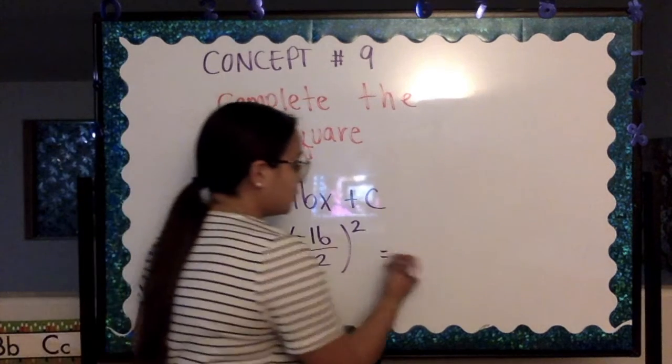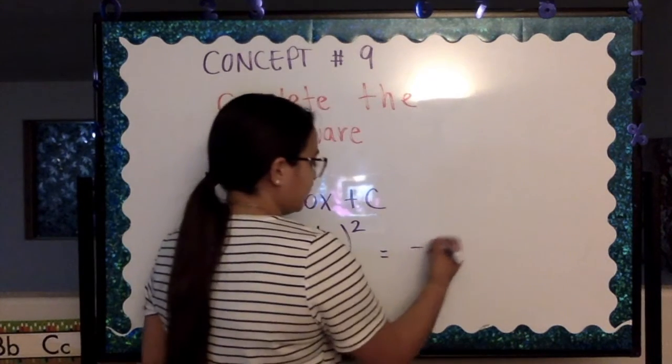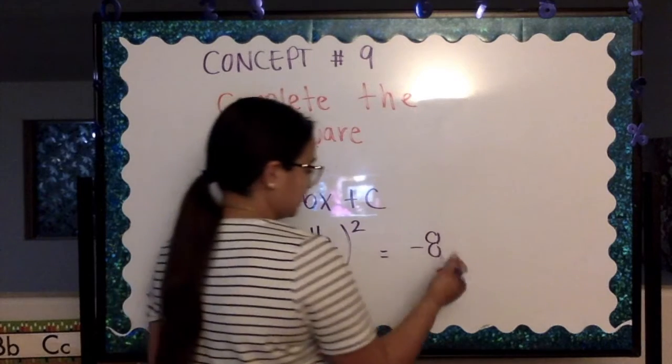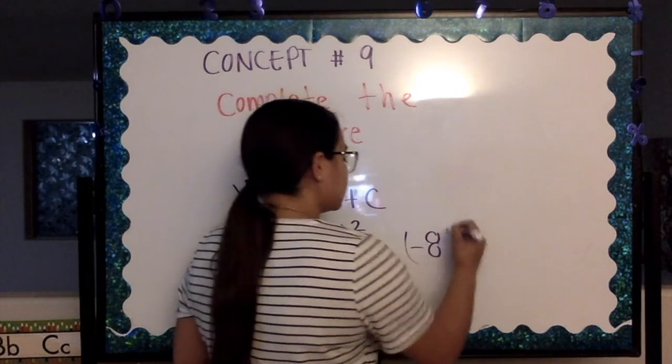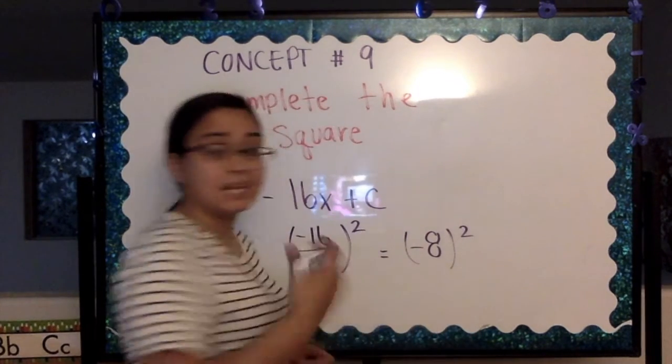We are left with negative 8 because we have a positive and a negative, so our answer is negative. And we're going to square it, which means 8 times 8.